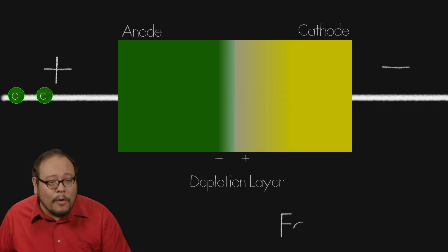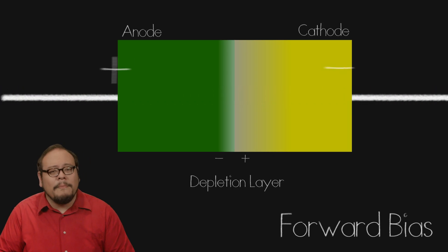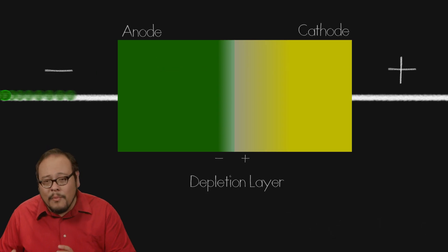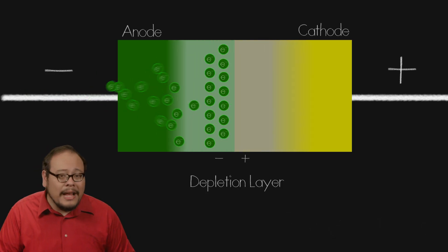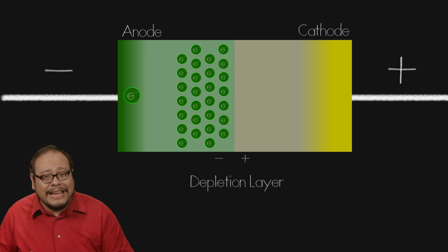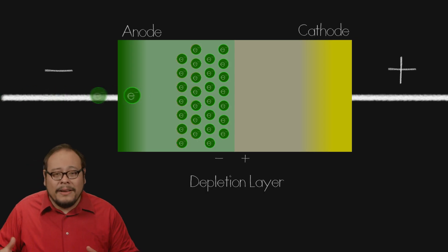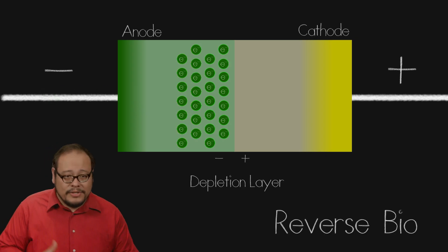This is called forward bias. Reverse the polarity of the battery, so now the battery is adding more electrons to the P-type side causing the depletion layer to increase. The negatively charged P-type area now repels electrons and the current cannot flow through the diode. This is called reverse bias.